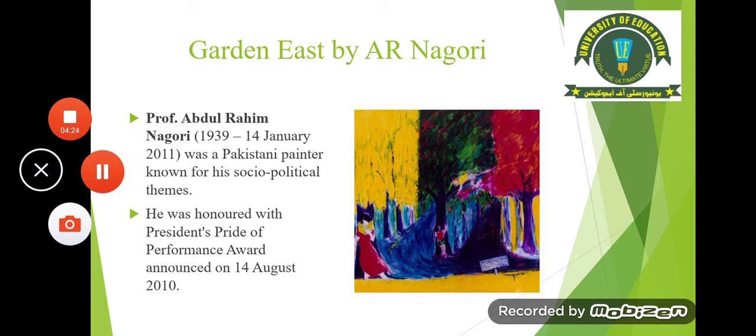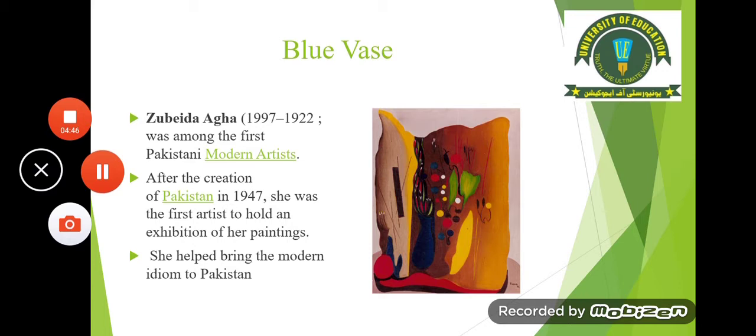Some artists follow a realistic style. Some are influenced by cubism. Some follow impressionism. You will see different variations in styles, and also even in the subject matter. Zubaydah Agha was a female artist, very famous and among the first Pakistani modern artists. Modern artist means that she adopted the specific features and characteristics of the modern art movement in her style.